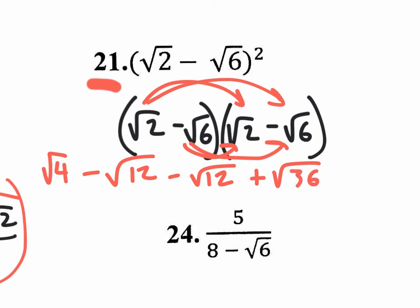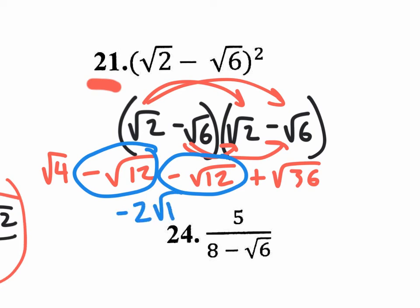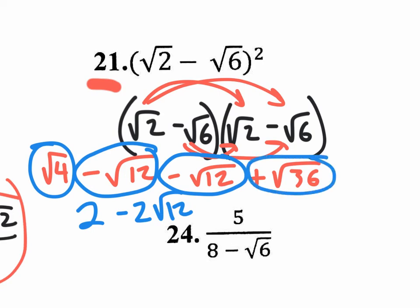Now look at the middle terms — they're not going to cancel this time. This time you actually have to combine them. Negative square root of 12 plus negative square root of 12 is negative 2 square roots of 12. The outside square root of 4 becomes a nice 2, and the square root of 36 becomes plus 6. Now you have three terms, and out of those you can combine 2 plus 6 to get 8.